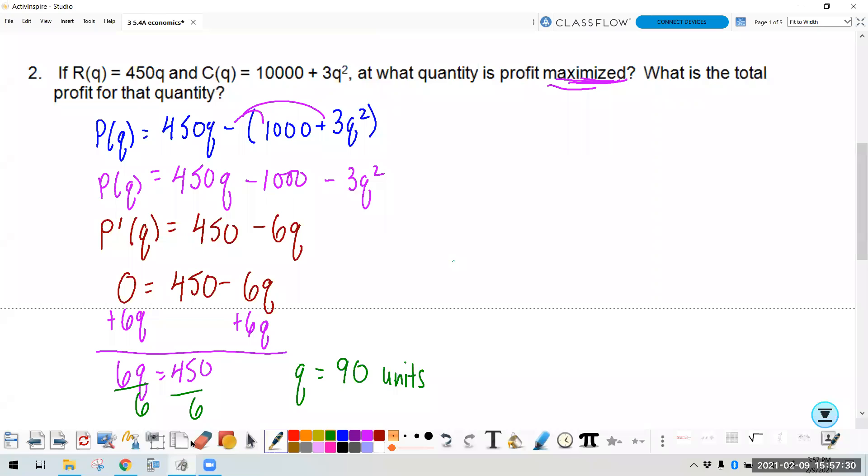So Q is 90 units. No, it's not. That is wrong arithmetic. It's 75 units. Sorry about that. So Q is 75 units. So that is what quantity.